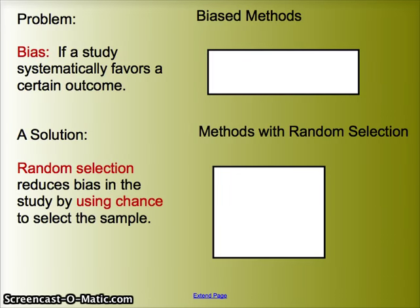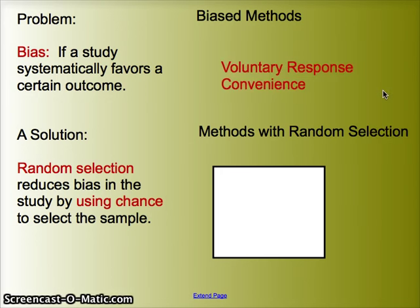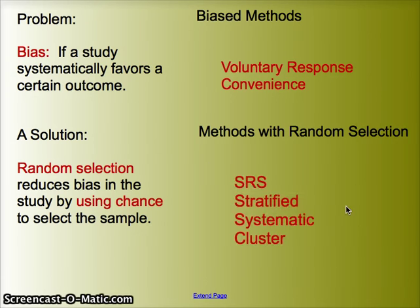Remember, the point of random selection is to avoid bias. Voluntary and convenient sampling don't have randomization in them. We improve those methodologies by introducing randomization, and so these four methods use random selection in some form.